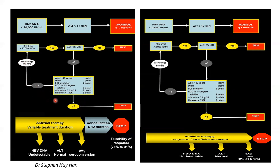For EAG negative patients: if DNA is low and ALT is low, we don't treat. If DNA is more than 2,000 and ALT is more than two times the upper limit of normal, we treat. If DNA is high but ALT is normal, we use the same scoring protocol — treat if score more than 3, otherwise follow up. What is peculiar about EAG negative patients is they require long-term or indefinite therapy.